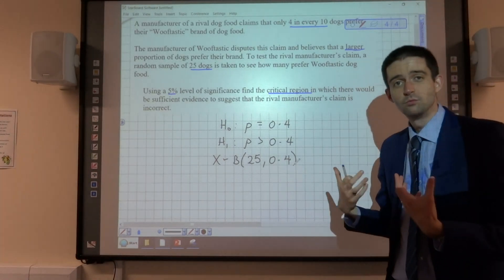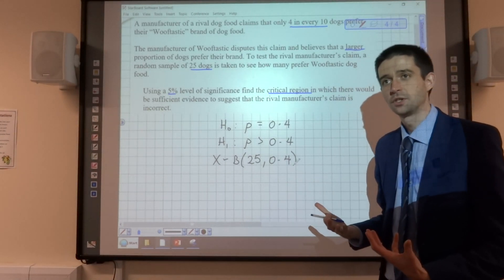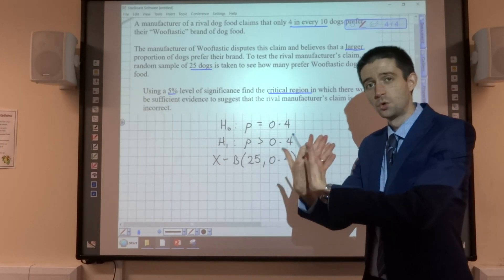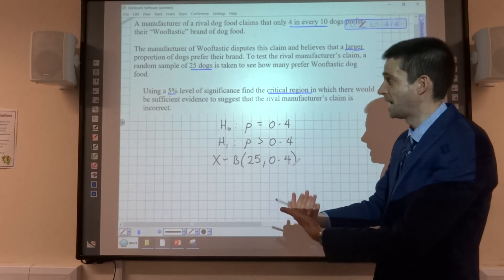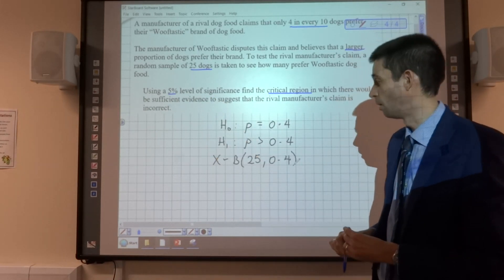And we would be rejecting our null hypothesis if the probability of more than a certain number is less than our significance level of 5%.